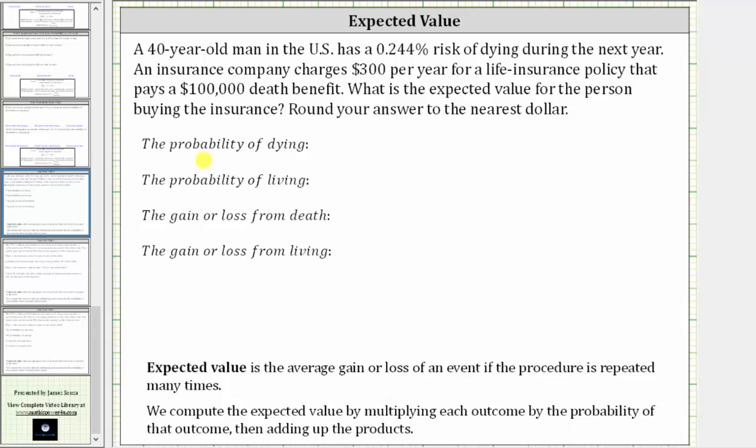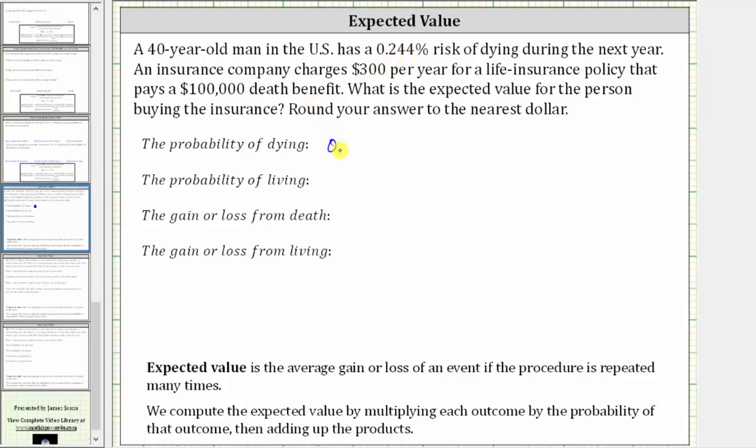So let's first determine the probability of dying, which is given as 0.244%, which we must express as a decimal. So we have 0.244%, which as a decimal is 0.00244.